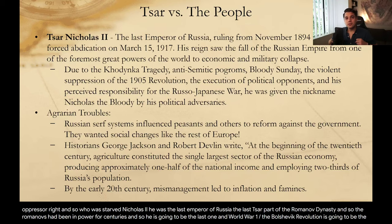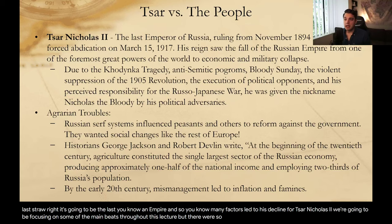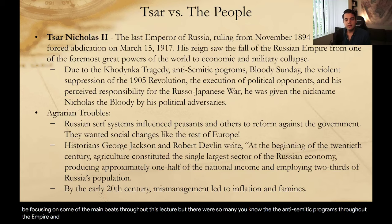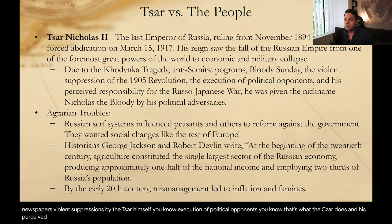World War I and the Bolshevik Revolution is going to be the last straw — the last tilting moment for the Russian Empire. Many factors led to the decline of Tsar Nicholas II. There were the anti-Semitic pogroms throughout the empire, the killing and massacring of Jews. We have Bloody Sunday that spread throughout the newspapers. There were violent suppressions by the Tsar himself, execution of political opponents, and his perceived responsibility for the failure in the Russo-Japanese War.